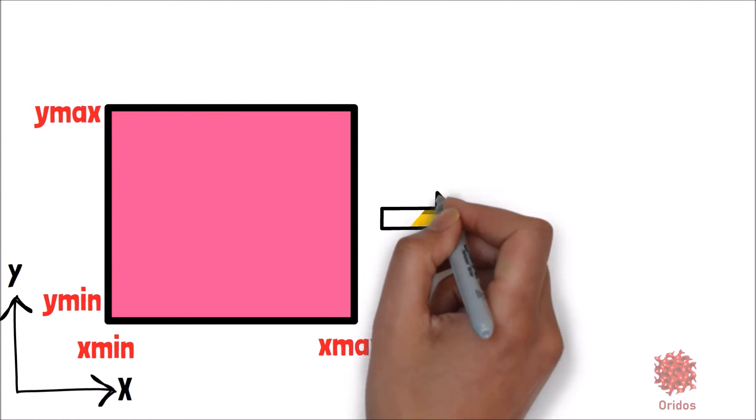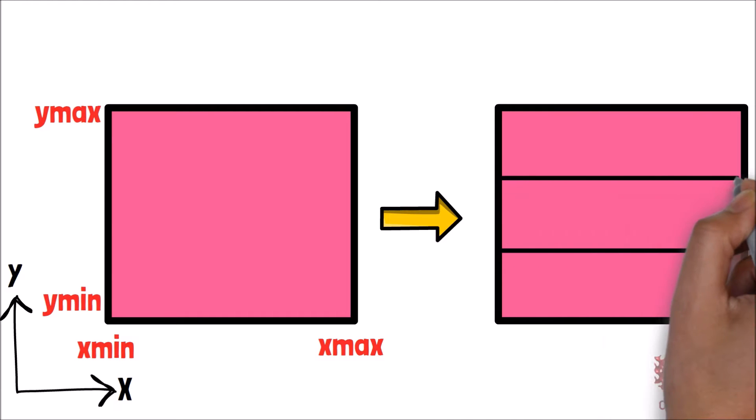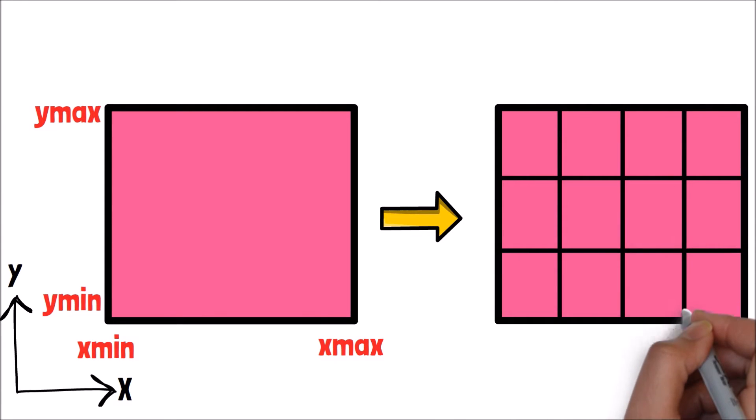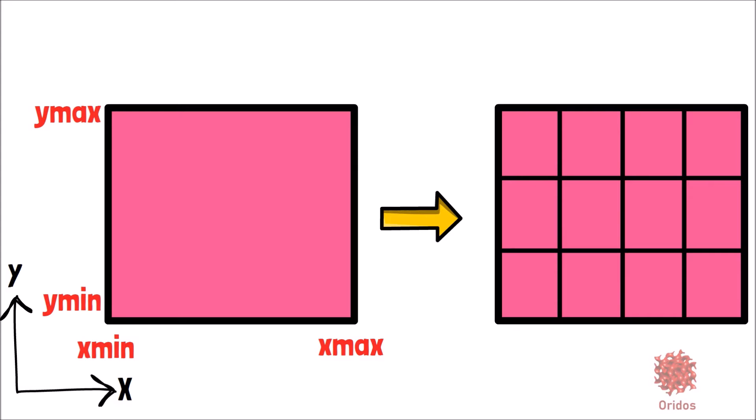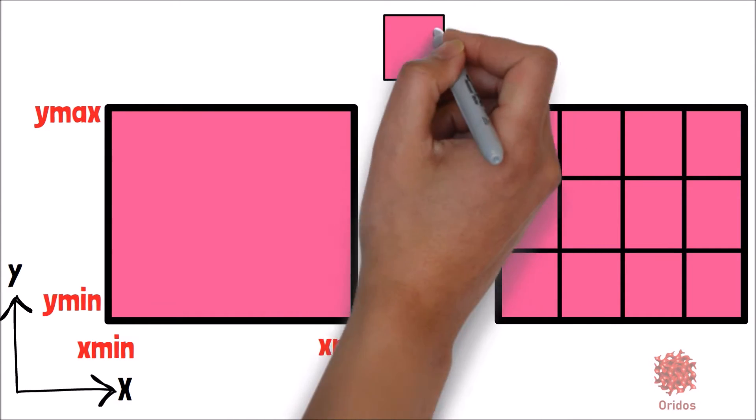Next, let's assume we want four elements in the x-direction and three in the y-direction. You might ask what an element is. We divide the domain into small pieces for finite element purposes, and each is called an element, something like this one.